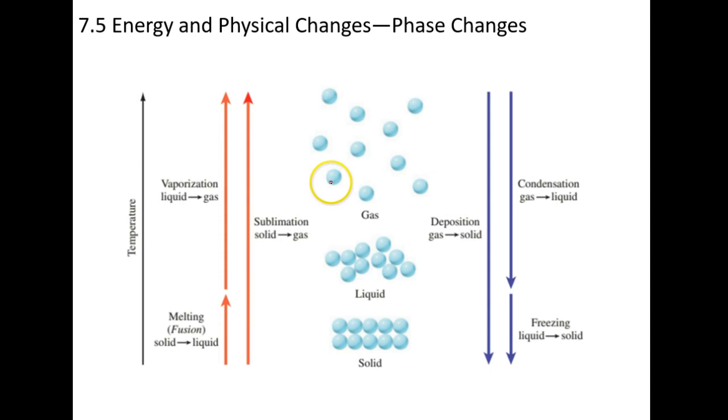This is just the summary of all of that. Solid to liquid is called melting, also called fusion. Going from a liquid to a gas is called vaporization. Going from a solid directly to a gas is called sublimation. This is the reverse process. Deposition, from a gas directly to a solid. Condensation, gas to liquid, and freezing liquid to solid. That is pretty much it. Very quick chapter. And I will see you in class. Thank you.